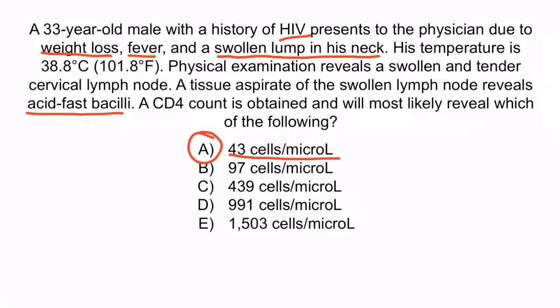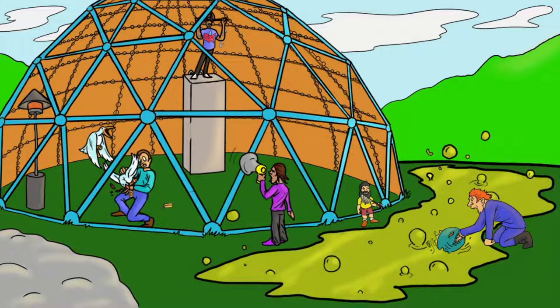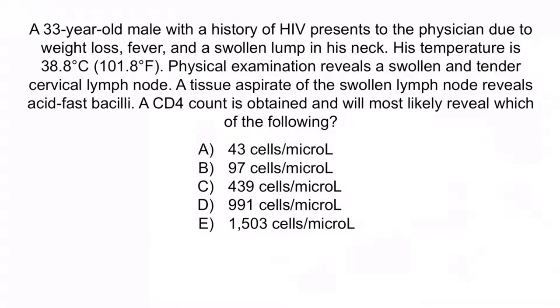You may have thought about Mycobacterium scrofulaceum and thought that a normal CD4 count was possible, such as choice E. However, the question stem states that our patient has HIV, which makes an AIDS-defining illness such as MAC more likely than the rare Mycobacterium scrofulaceum. Also, Mycobacterium scrofulaceum is more common in children, not adults. Recall that the guy with the U.S. map shirt near the zipline helps you remember that MAC infections are most common when the CD4 count drops below 50, which is why these patients may be given prophylactic azithromycin. Choices B through E are therefore less likely.